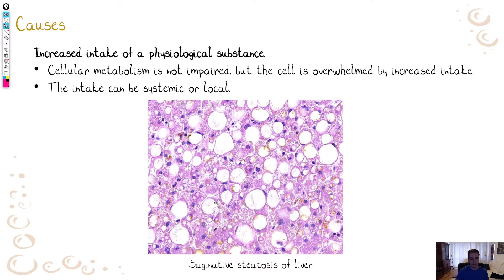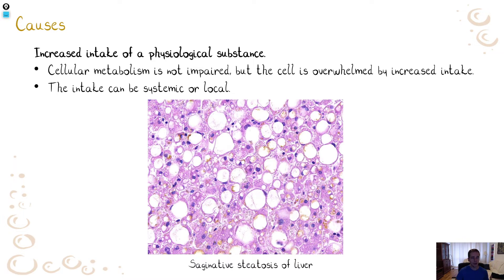In this situation, there is nothing wrong with the hepatocytes — they are just overwhelmed by the increased intake of substance. The fat is seen as empty vacuoles, because fat is washed out by formalin fixation. So those empty vacuoles are just empty spaces where the fat used to be. Some droplets are small and multiple, some droplets are large, and the hepatocyte can look almost like an adipocyte. The cell is simply overwhelmed by the increased intake of a physiological substance.